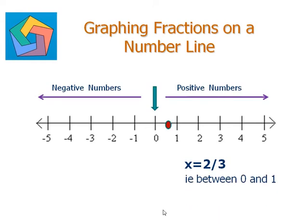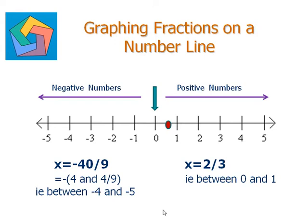Similarly, x equals negative 40 over 9. Now changing this improper fraction into a mixed fraction, we see that negative 40 over 9 is negative 4 and 4 over 9. So it would lie between negative 4 and negative 5, so we plot a point between negative 4 and negative 5.